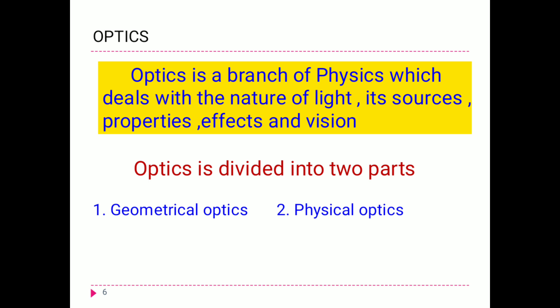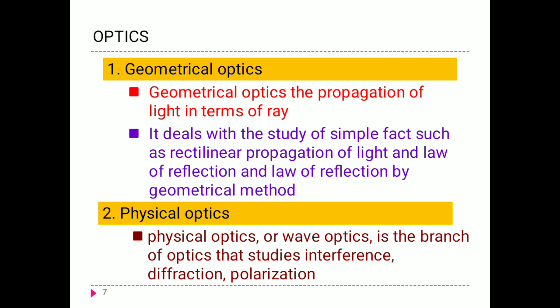Optics is divided into two parts: one is geometrical optics and another one is physical optics. In geometrical optics, the propagation of light is described in terms of rays. When light is reflected from a mirror, the angle of incidence is equal to the angle of reflection. This was stated by Euclid in his book. Alexandria suggested that light traverses the shortest path between two points.